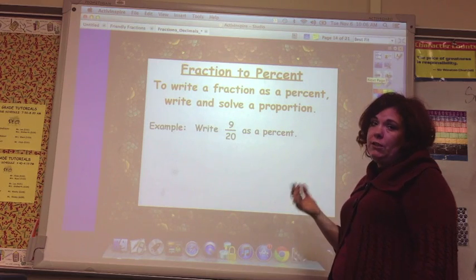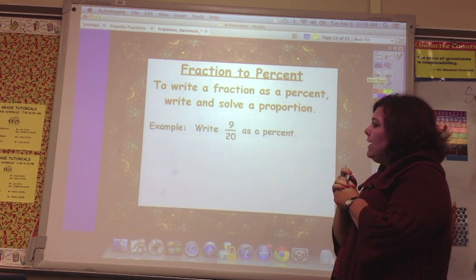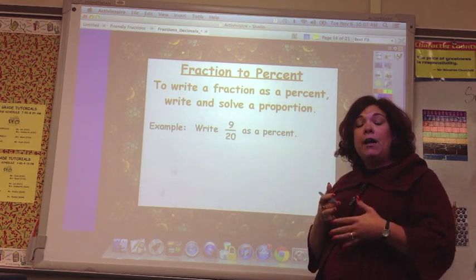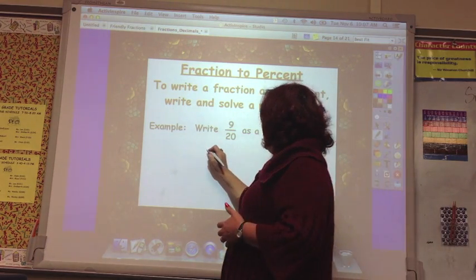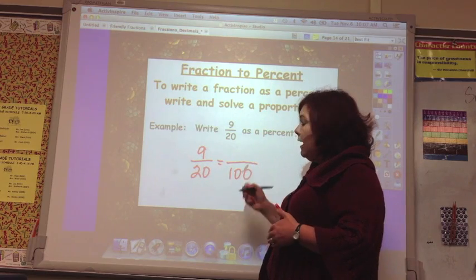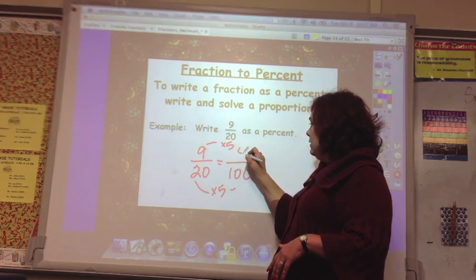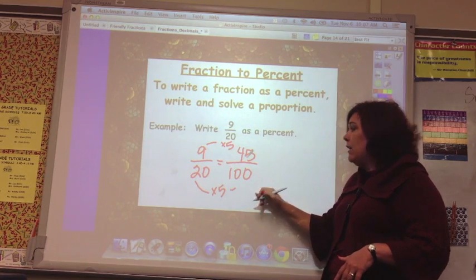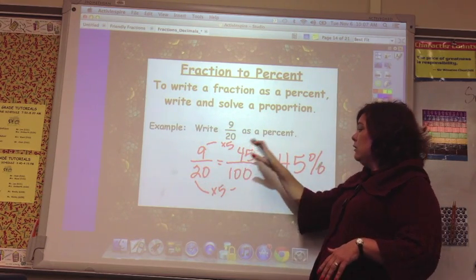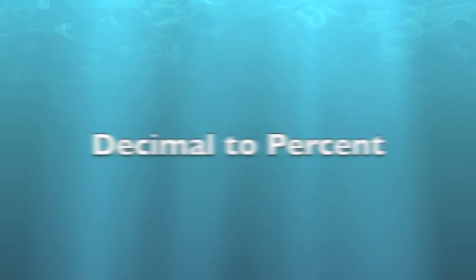Now we're going to do fraction to percent. So to write a fraction as a percent, write and solve a proportion. So basically you've got to get it to 100 so you can say out of 100, and that is percent. So if you've got 9 20ths, you've got to get it to 100. How do you do that? You do it by scale factor. Times 5, times 5 is 45. Once you have it out of 100, you can write 45%. So this is taking a fraction to a percent. You've got to get it over 100.